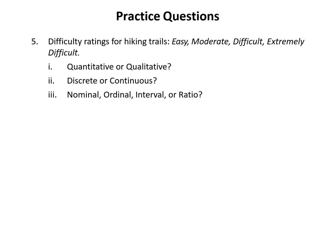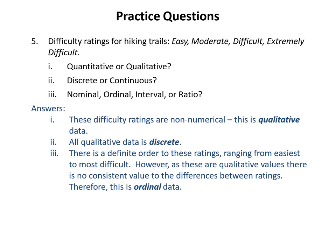Question five: difficulty ratings for hiking trails — easy, moderate, difficult, and extremely difficult. These ratings are non-numerical labels, so qualitative data. All qualitative data is discrete. There is a definite order to these ratings from easy through to extremely difficult. However, since these are qualitative values, there's no consistent measurable scale for the differences. So this is ordinal data. Answer: qualitative, discrete, and ordinal.